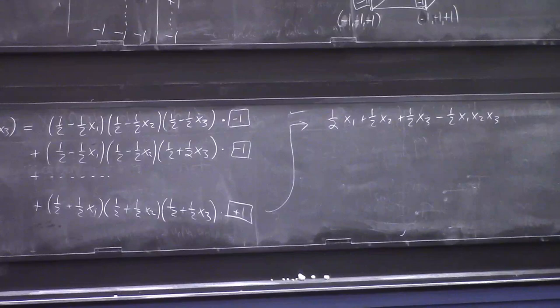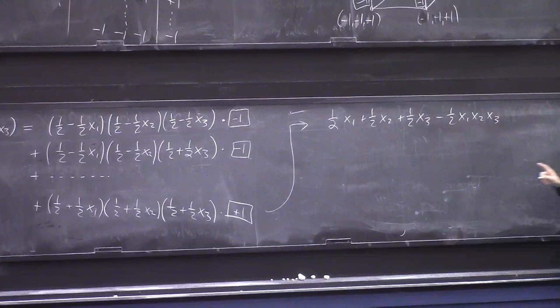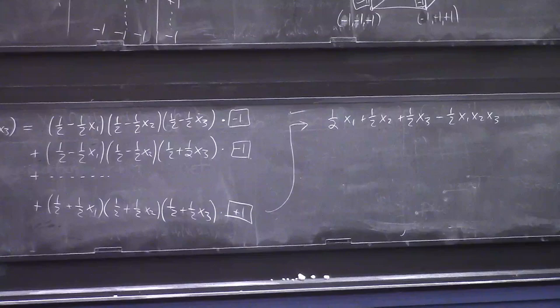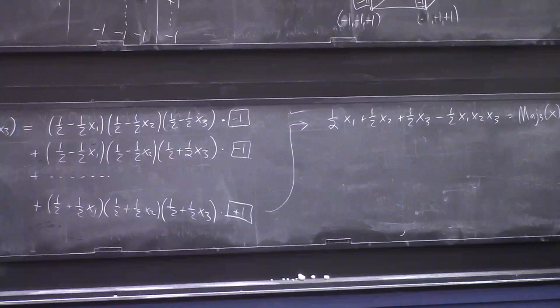If you expand all that out — or have your computer do it — tons of cancellation happens and you get the much nicer form: ½x1 + ½x2 + ½x3 − ½x1x2x3. You can verify: plugging in (1,1,1) gives ½+½+½−½ = 1, which is the majority of (1,1,1). Plugging in (+1,+1,−1) gives +½+½−½+½ = 1, which is also correct. So we got a nice polynomial that computes the majority-of-3 function in the ±1 notation.